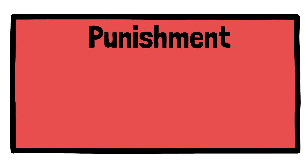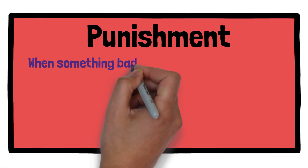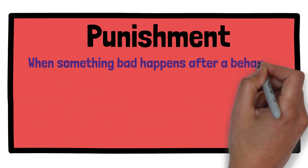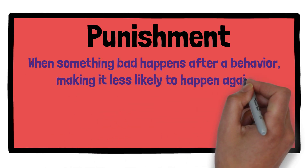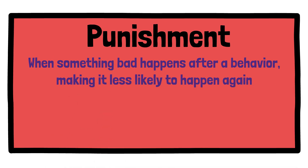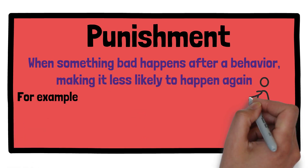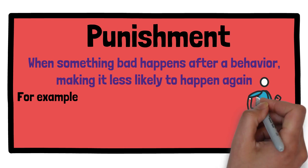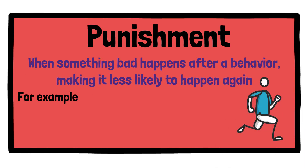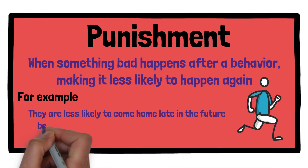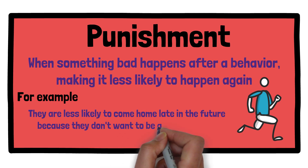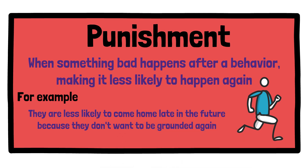Punishment is when something bad happens after a behavior, making it less likely to happen again. For example, if a teenager is grounded for coming home late, they are less likely to come home late in the future because they don't want to be grounded again.